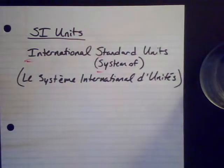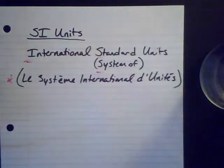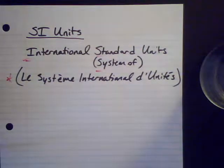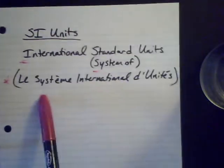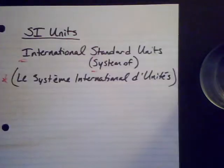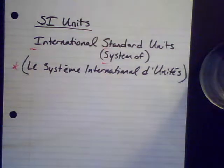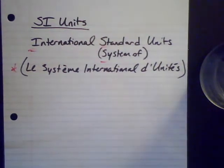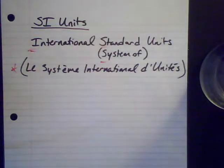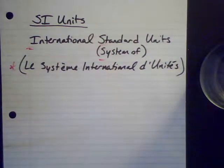You might wonder why it's SI instead of IS, but it actually comes from the French — "Système International" — so the SI comes from that French phrasing. France was really at the forefront of chemistry back in the day, along with England and a couple of other European countries, and they had a large hand in putting together the standards by which we do science.